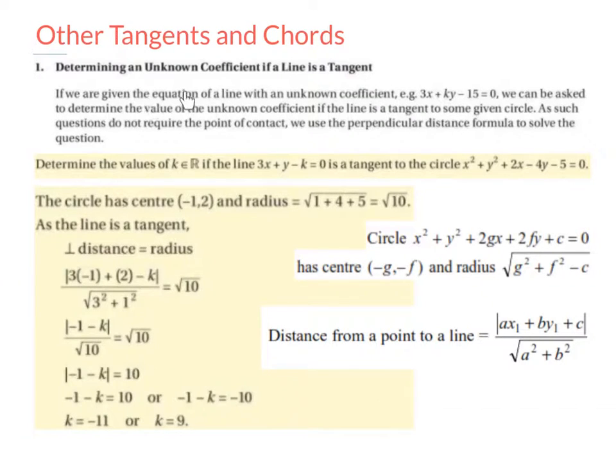If we are given the equation of a line with an unknown coefficient, for example 3x plus ky minus 15 equals 0, we can be asked to determine the value of the unknown coefficient if the line is a tangent to some given circle. As such, questions do not require the point of contact. We use the perpendicular distance formula to solve the question.